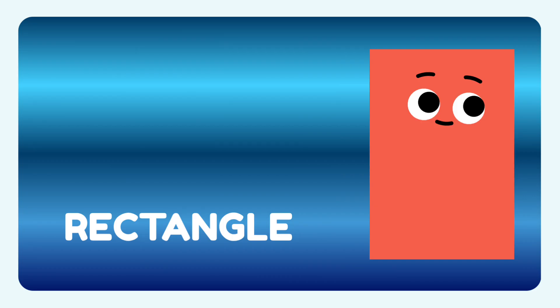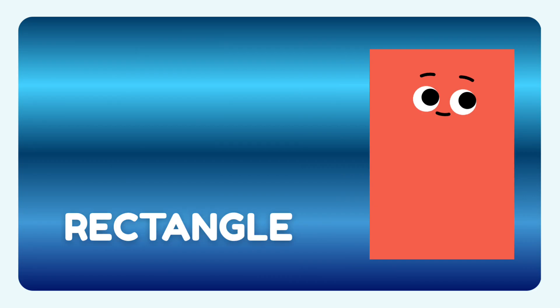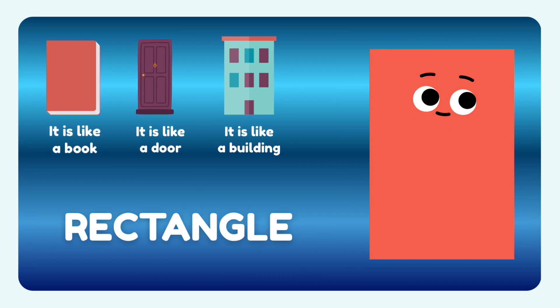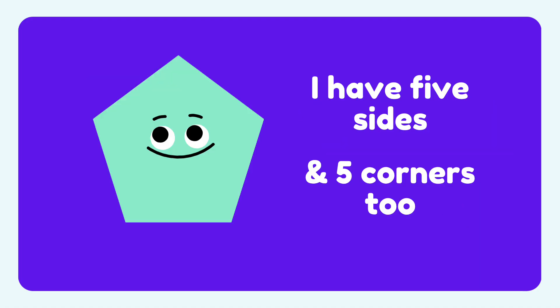You can find me anywhere around your surroundings, like a book, like a door, or like a building. All these objects can be seen in the shape of a rectangle. I am a pentagon. I have five sides and five corners too.